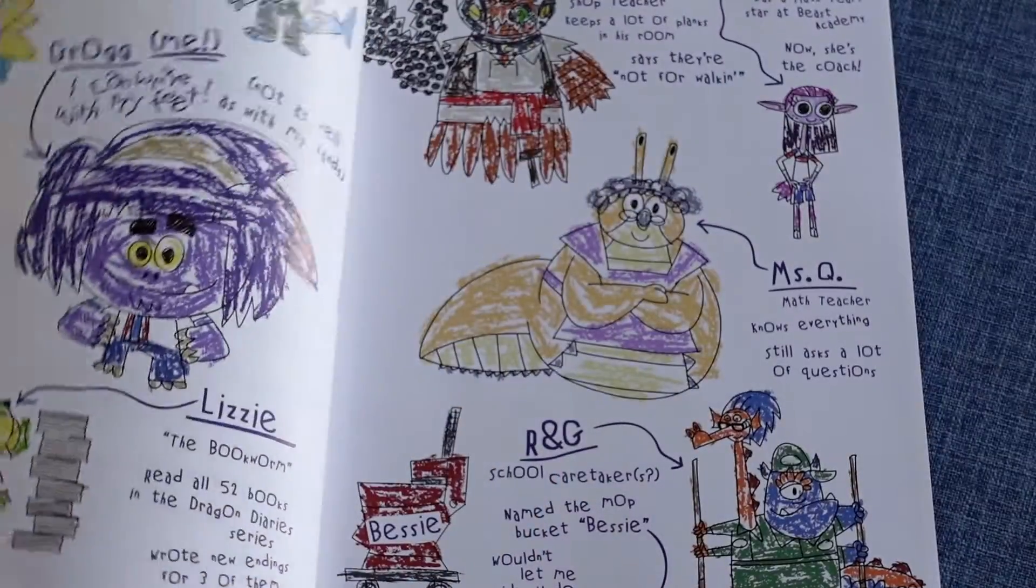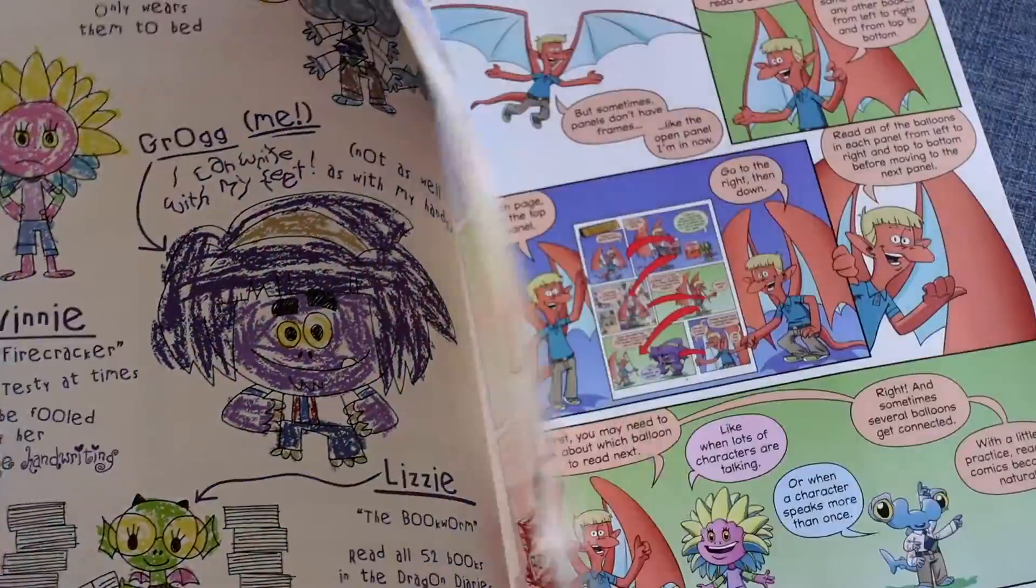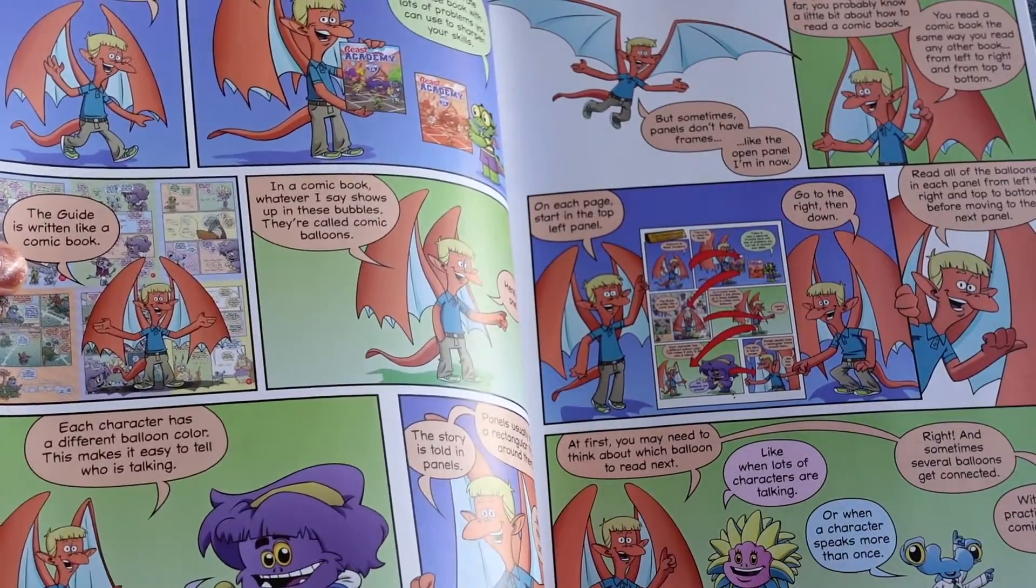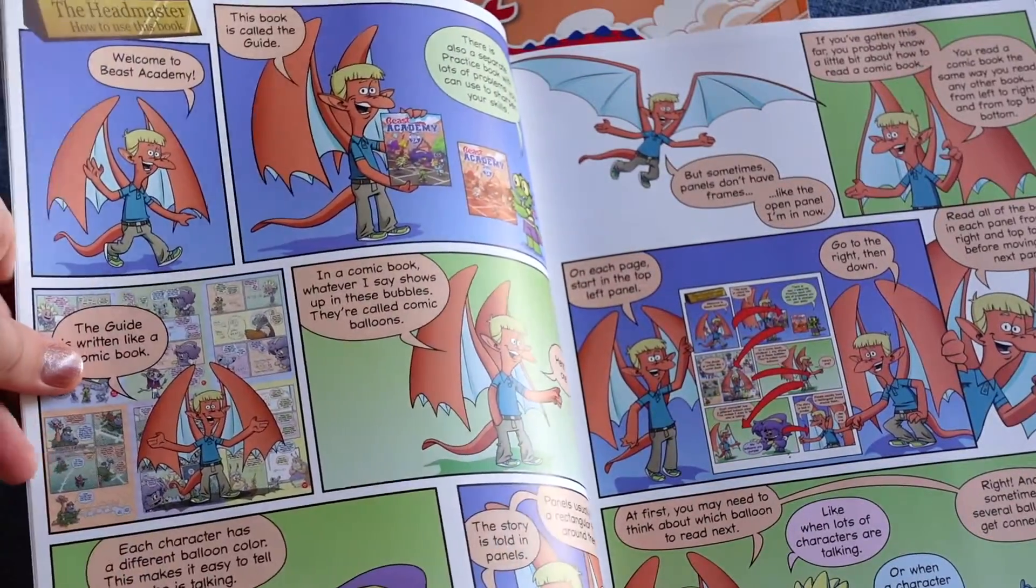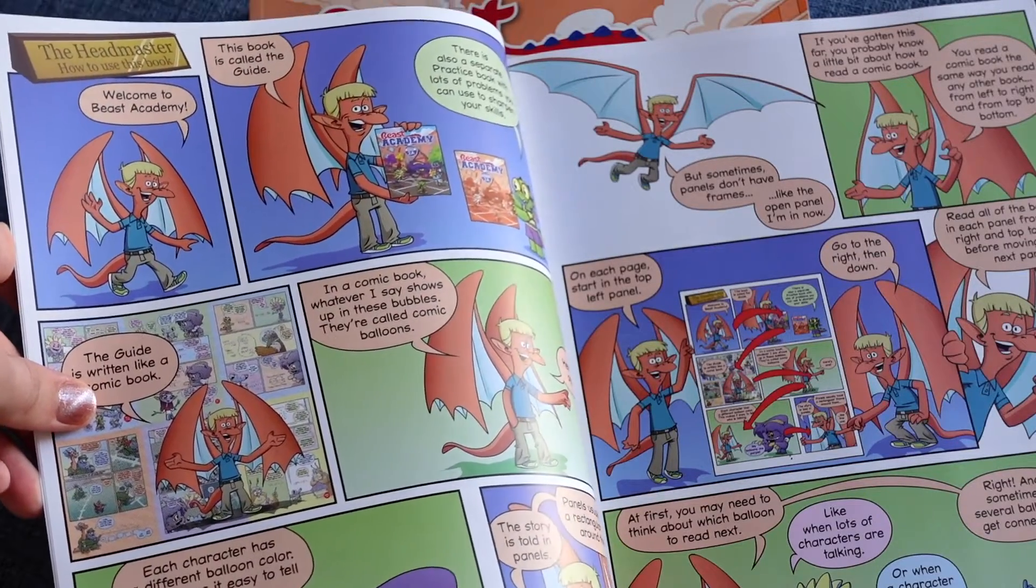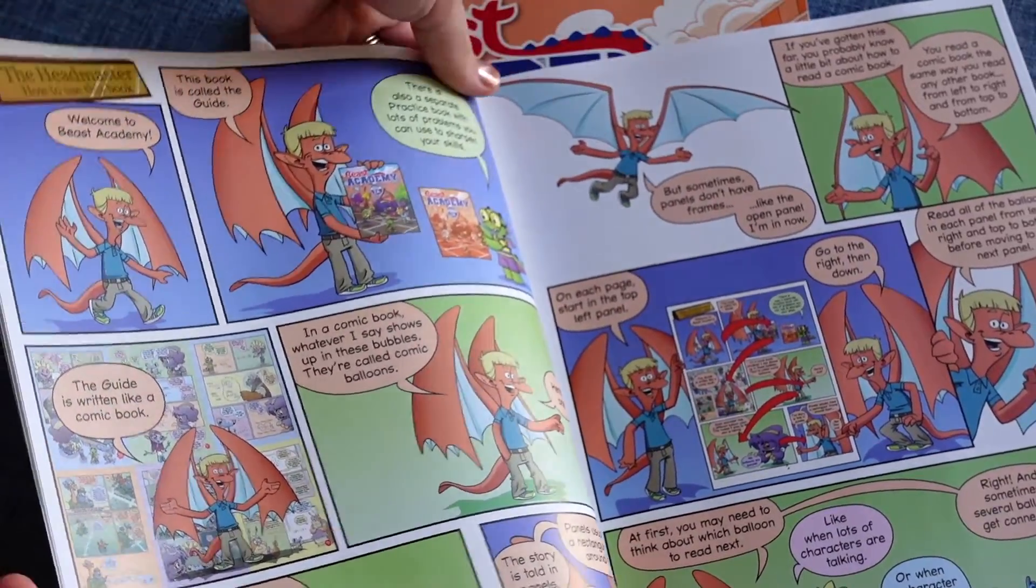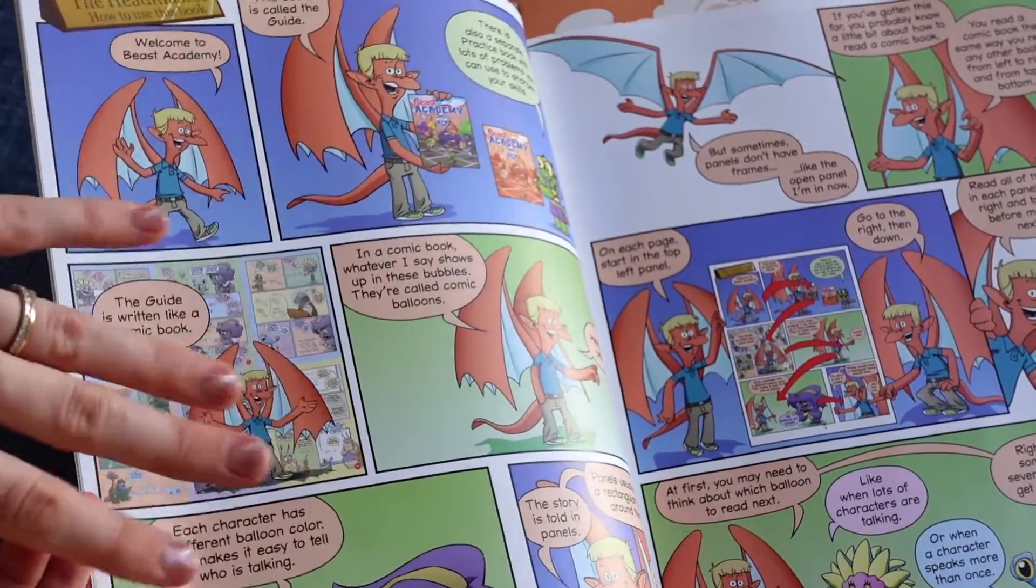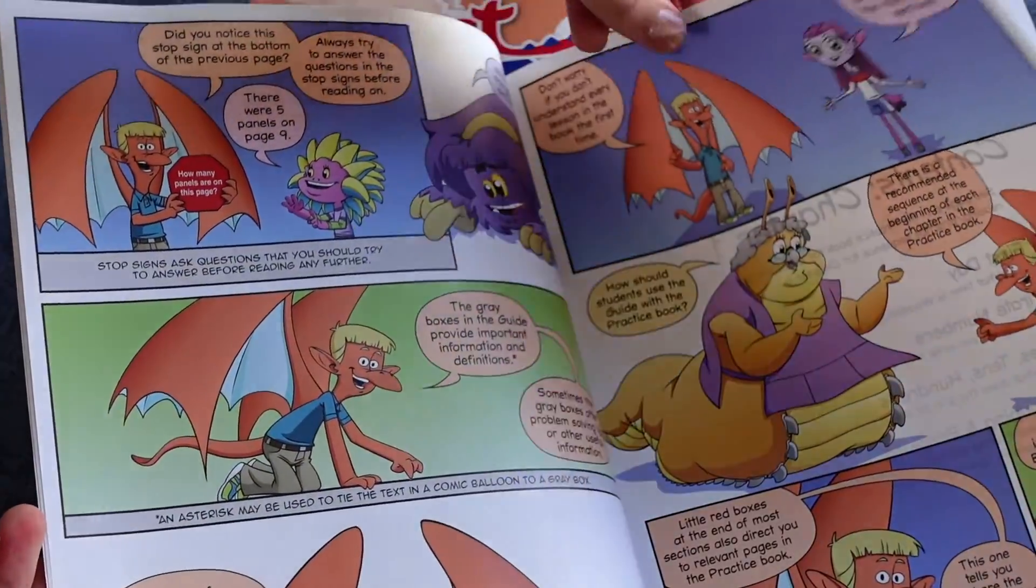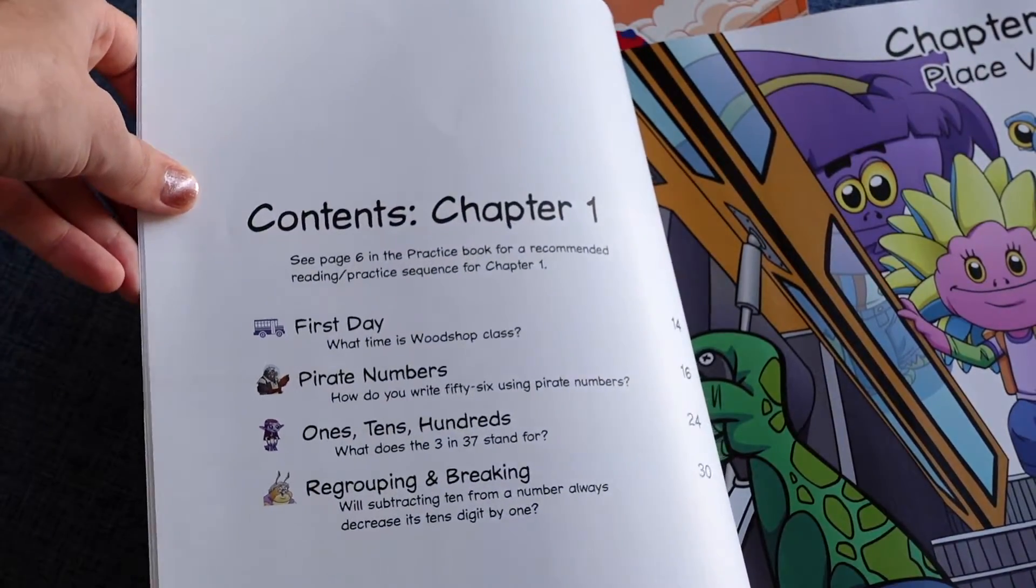Then they have an introduction to all of the characters. And you begin with a comic book style introduction, which is how to use this book. So it's a little primer in how to read the comic book style, how to put certain things that should be paid attention to in the text. So if you're just starting out with Beast Academy, this is definitely helpful to go over with your child. So that's your how to use the book, and then you get straight into your chapter.